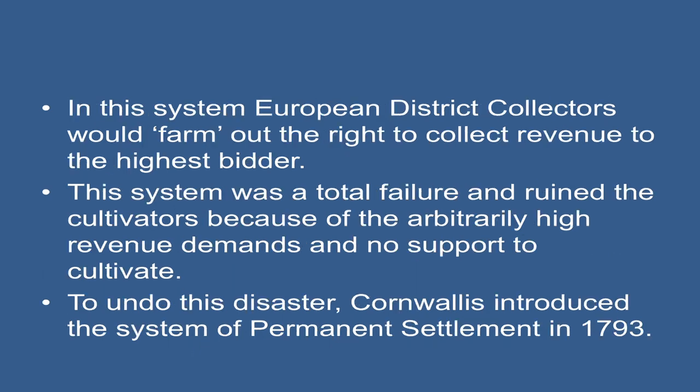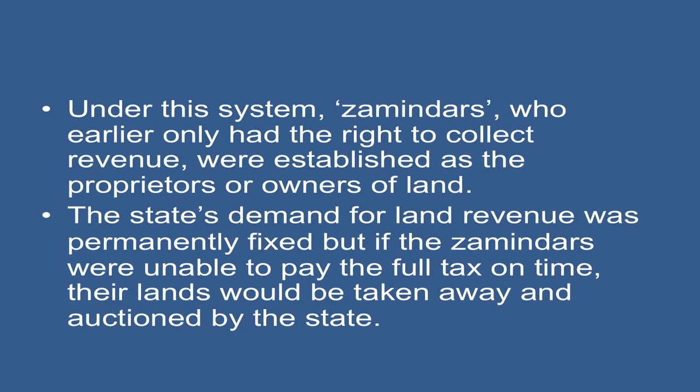In 1772, the Governor of Bengal, Warren Hastings, introduced a system of revenue farming in the province of Bengal, in which European district collectors would farm out the right to collect revenue to the highest bidder. This system was a total failure and ruined the cultivators because of arbitrarily high revenue demands and no support to the cultivators.